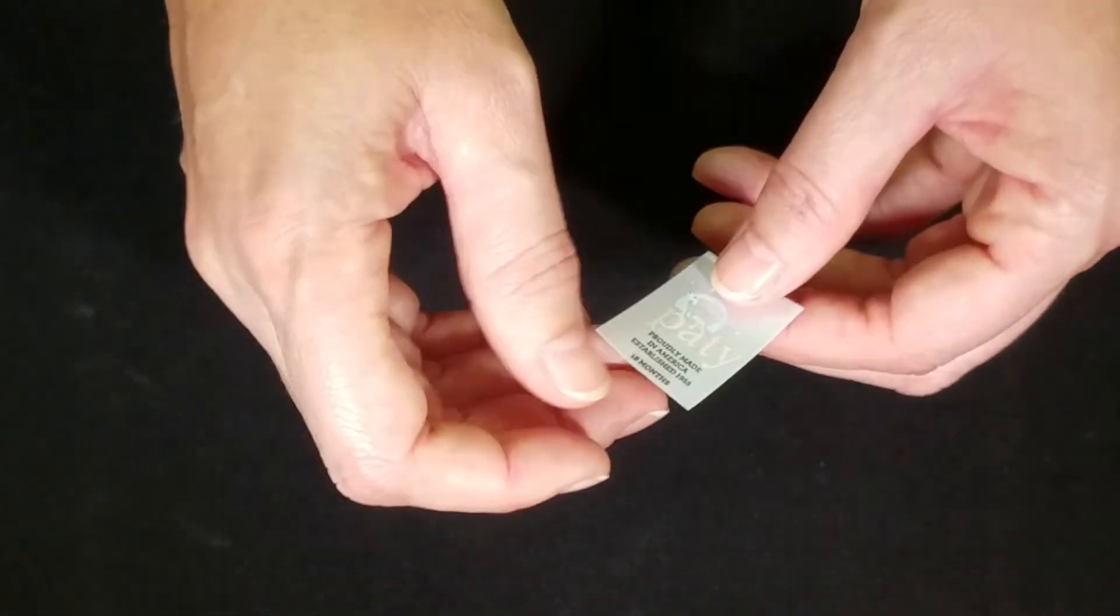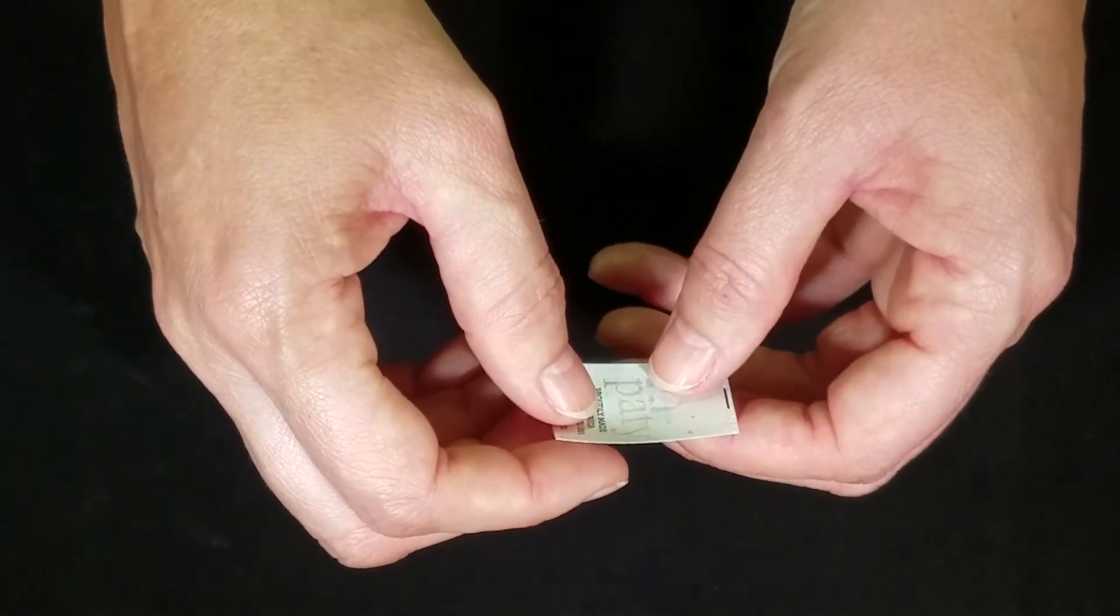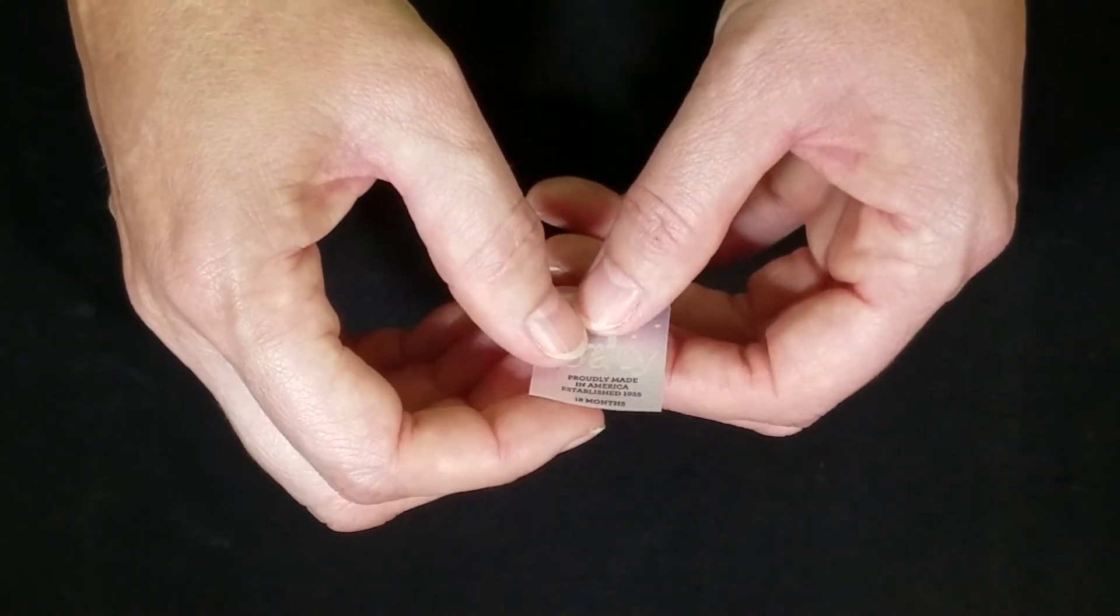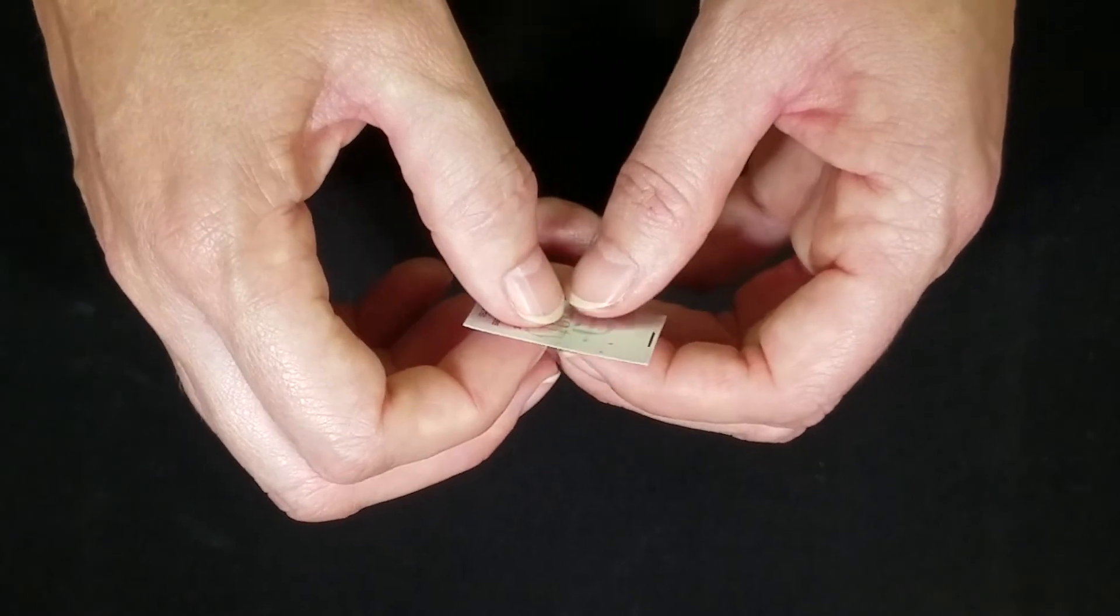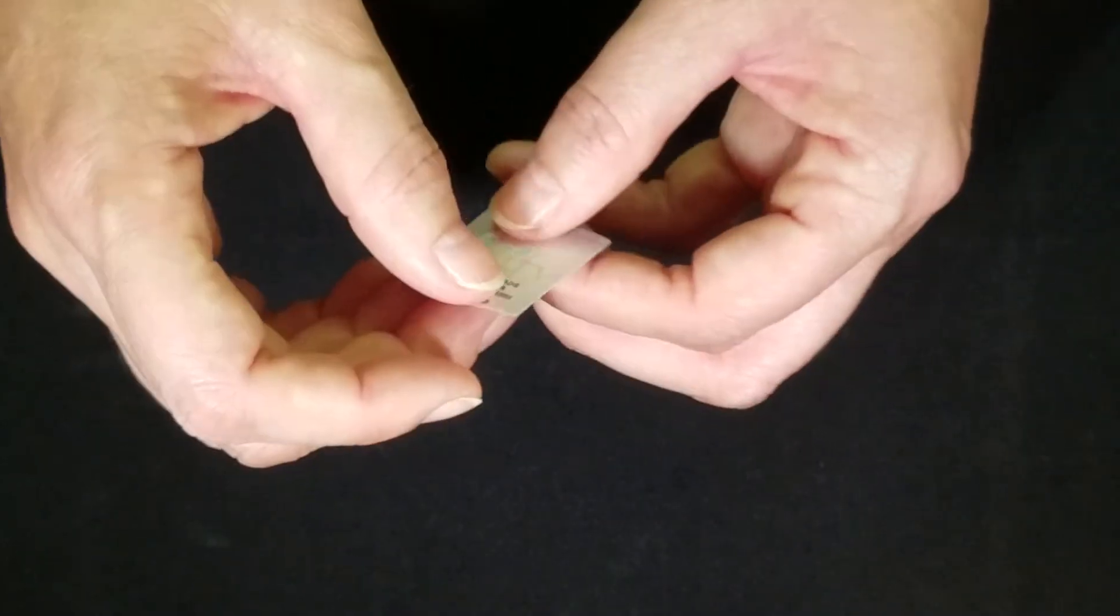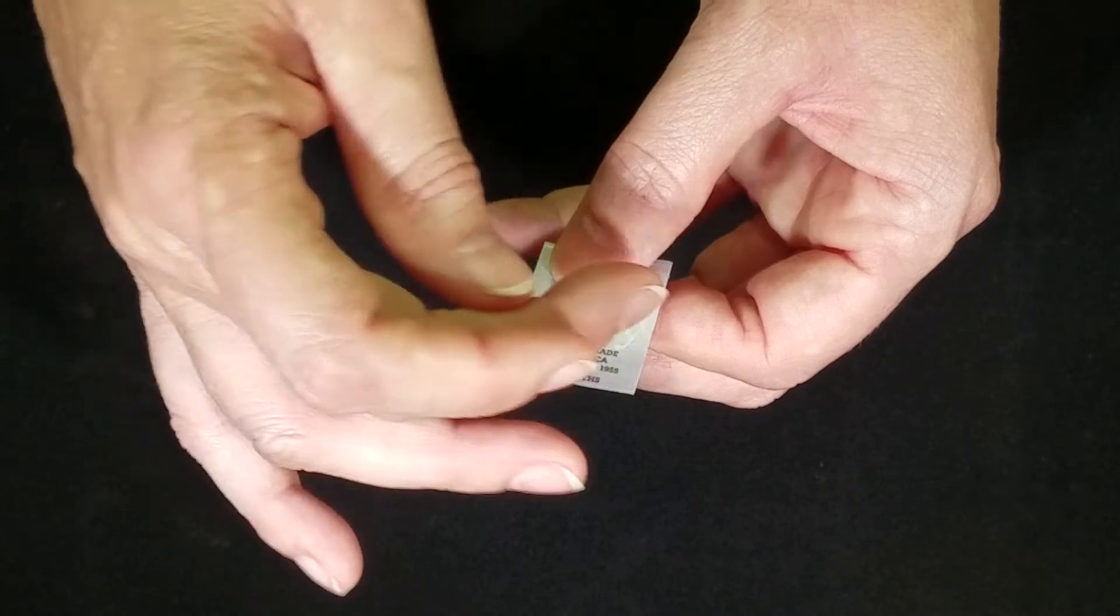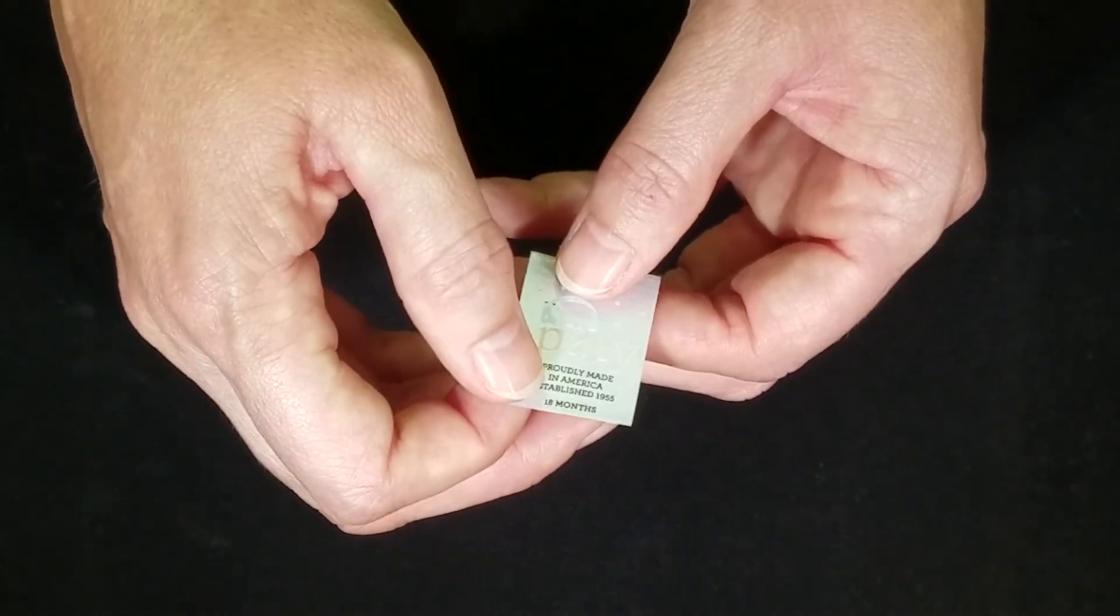The second type is called slit edge satin and this type of satin is flexible and soft to the touch. It's thinner than woven edge and it has a really silky feel to it. As you can see it's just a straight edge. It does not have a woven edge to it.